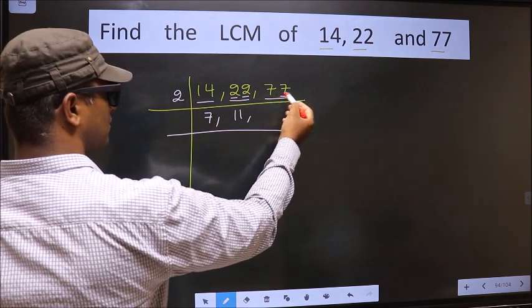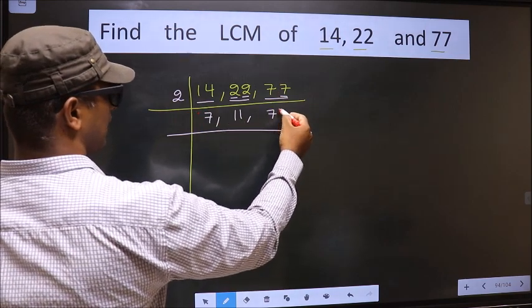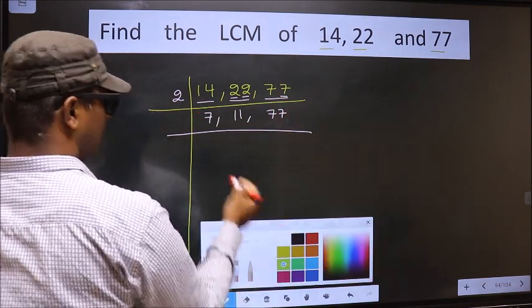The other number 77. Last digit 7 is not even. So, this number is not divisible by 2. So, we write it down as it is.